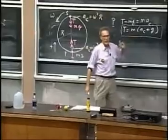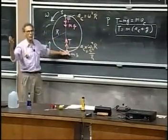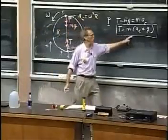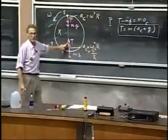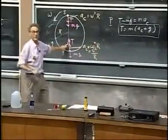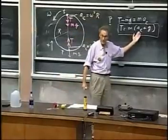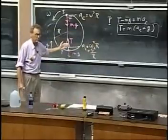If the centripetal acceleration at this point, for instance, were ten meters per second squared, then you would weigh twice your normal weight. The tension here would be twice Mg. If this were five meters per second squared, then you would be one and a half times your weight.